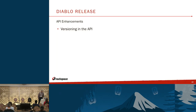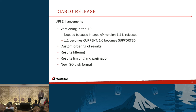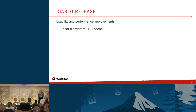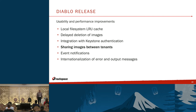In Diablo, there was versioning of the API because 1.1 was released — so 1.1 became current and 1.0 became supported. Additions included custom ordering of results, results filtering, results limiting and pagination, and the new ISO disk format. Performance improvements included a local file system cache, delayed deletion of images, integration with Keystone, and sharing images between tenants — in bold because that's why there's a new API, since the image sharing calls were added. Also event notifications and internationalization of error and output messages.